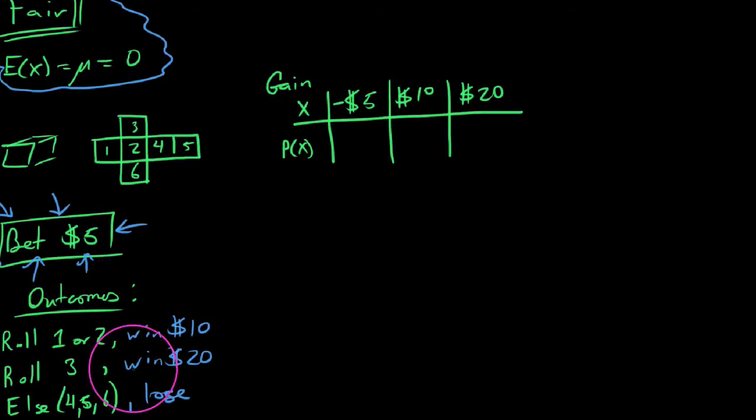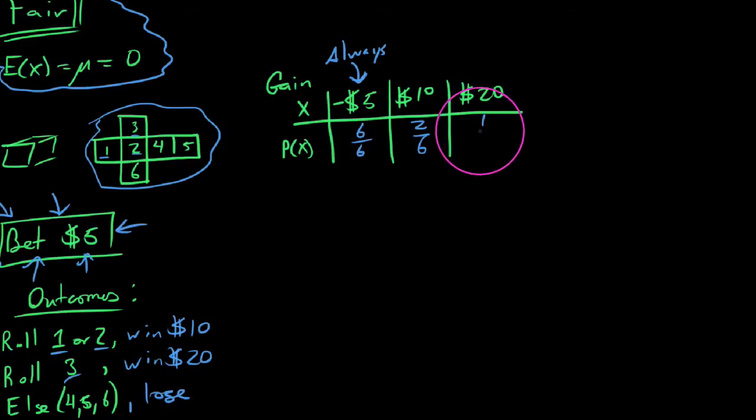So now what we want to do is actually go through and calculate the likelihood that each of these things actually occurs. The interesting thing about this loss here is it is definite, all of the time. Regardless of whether you won money or you lost money, you're always paying this $5. So six out of six are going to cause you to lose the $5. But in terms of the $10, we'll win $10 if we roll a one or a two. Since there are two outcomes out of six that give us that, it is a 2/6 chance. And last but not least, I could win $20, but there was only one outcome, 1/6.